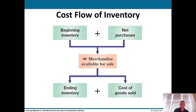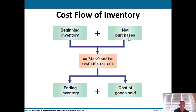The cost flow of inventory: beginning inventory — what you brought over from last period — plus net purchases equals merchandise available for sale this period. Then two things can happen to your inventory: you either sell it, in which case it goes to cost of goods sold, or you don't, and it stays in ending inventory.